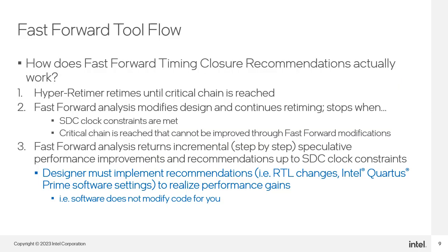During compilation, the HyperRetimer will retime the results of the place and route until it hits a critical chain — a path it cannot improve through retiming. There it stops and the retime folder of the compilation report is produced. When Fast Forward runs, it modifies the netlist and attempts to retime again, trying a collection of different modifications until either the performance reaches your target SDC constraints or it reaches another critical chain that it cannot improve. In other words, applying further Fast Forward modifications fails to produce any further gain.